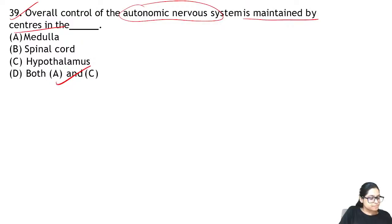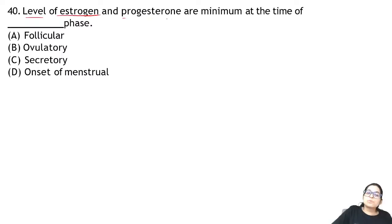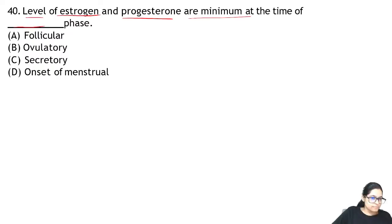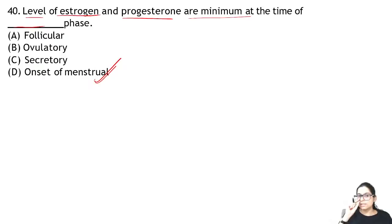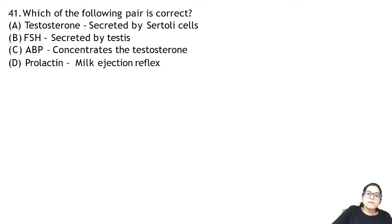Question 40: levels of estrogen and progesterone are minimum at the time of — they are minimum at the onset of menstruation. After that, both estrogen and progesterone increase significantly.